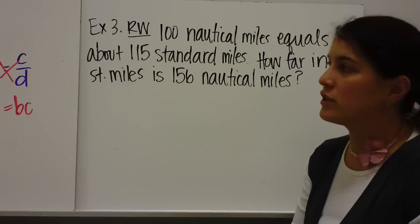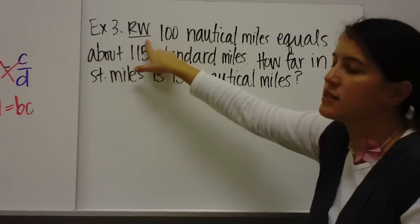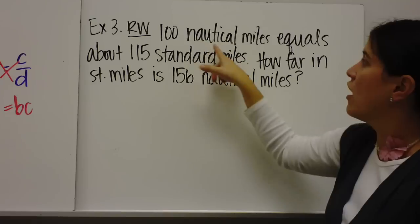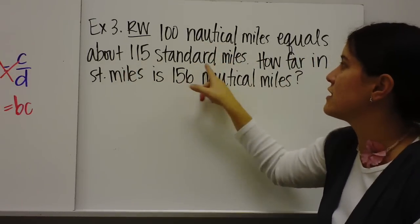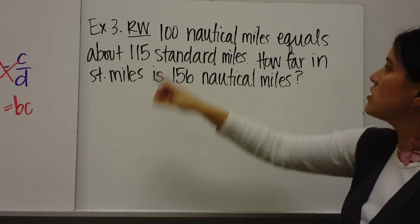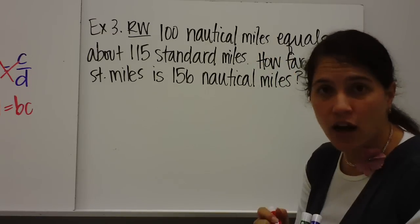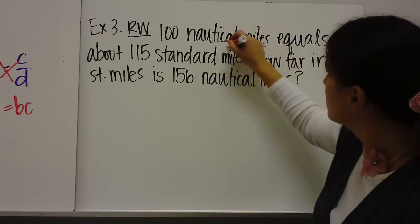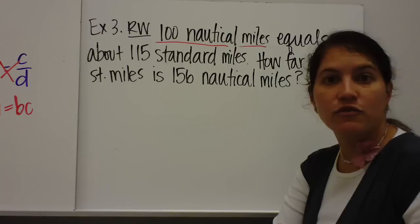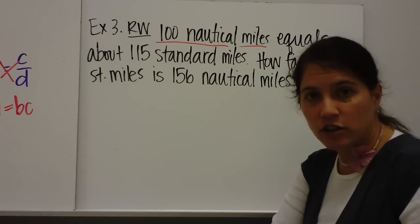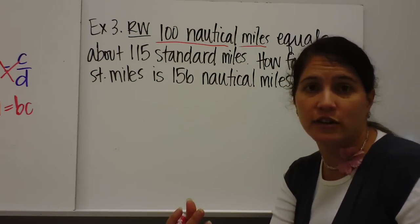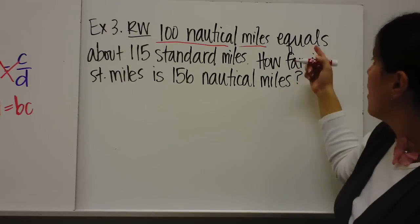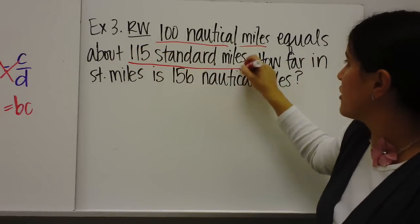Alright, so we've got some real world examples for you. Here we go. Real world example 3. 100 nautical miles equals about 115 standard miles. So let's talk about a nautical mile. Do you know what a nautical mile is? If you don't know what a nautical mile is, then look it up on Google. I know what it is, but maybe you can figure it out and you can tell me tomorrow.